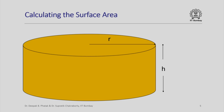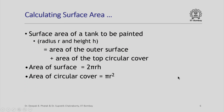First we try to see how we can calculate the surface area. This is a picture of a cylindrical tank with radius r and height h. The surface area to be painted equals the area of the outer surface plus the area of the top circular cover. The area of the outer surface is 2πrh, and the area of the circular top cover is πr². Their summation gives the total area.